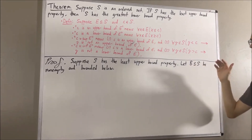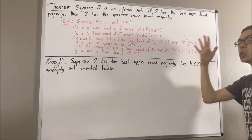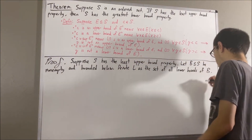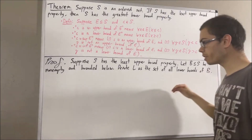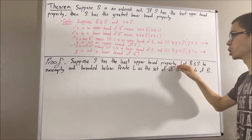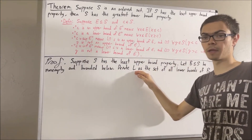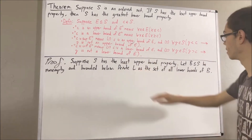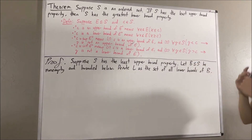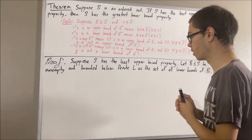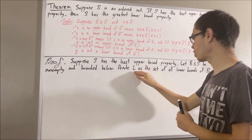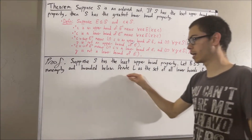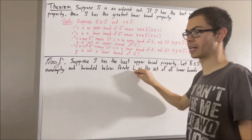Now, let's denote the set L by the set of all lower bounds of B. Our plan is to use the fact that S has the least upper bound property to show that L has a supremum. And from there, we're going to proceed to show that the supremum of L is in fact the infimum of B. So let's first show that L has a supremum. And to show that L has a supremum, we're going to show that L is non-empty and bounded above. Because if we can do that, we can apply the least upper bound property to conclude that L has a supremum.